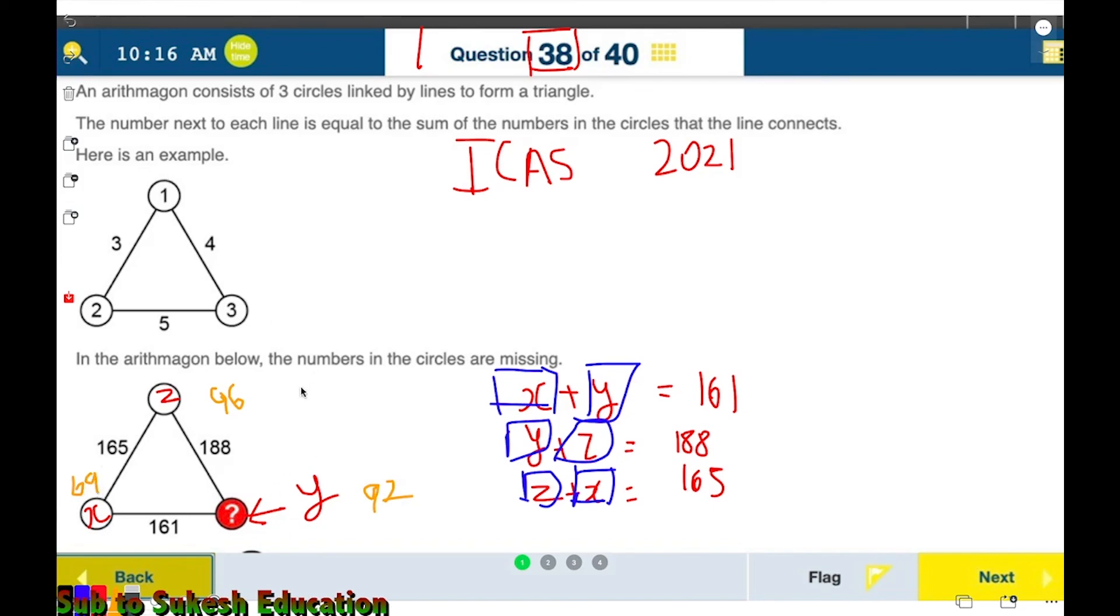You can add up any of these two and you'll get the same result. 96 plus 92 is 188, 92 plus 69 is 161, and 69 plus 96 is 165. So guys, that's how you solve the question. Hope you loved it. Do like and subscribe to my YouTube channel. Thanks guys!